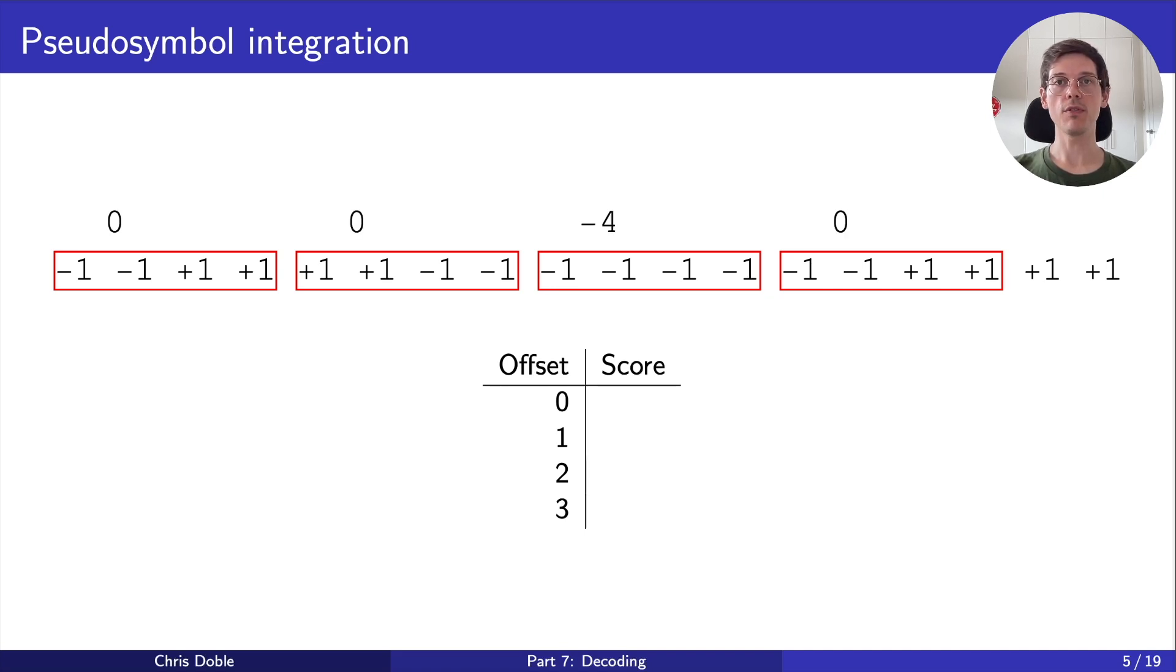For a proposed grouping, like this, we can calculate a score, telling us how well it collects similar values. To do that, we sum the values in each group, take the absolute value of those sums, and calculate their mean to get the score. This grouping doesn't do a very good job of collecting similar values, so the pseudo-symbols add destructively, and we get a low score.